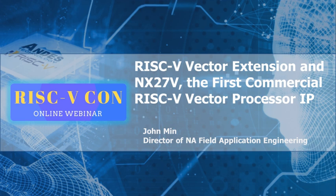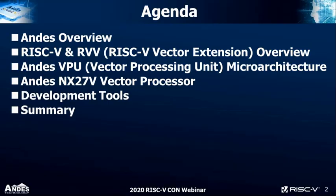What we'll talk about today: we'll do a quick overview, a couple of slides. We'll give you an overview of RISC-V and RISC-V Vectors with the extension specifically. I'll introduce the Andes Vector Processing Unit microarchitecture, and then follow up with our new processor, NX27B Vector Processors that implement via our VPU. We'll talk briefly about development tools, optimized performance, and we'll wind up with the summary and question and answers.